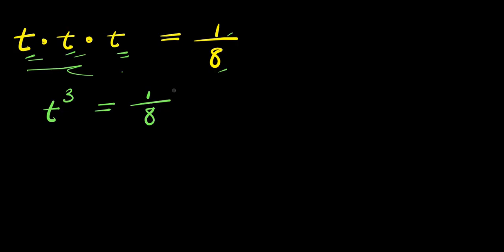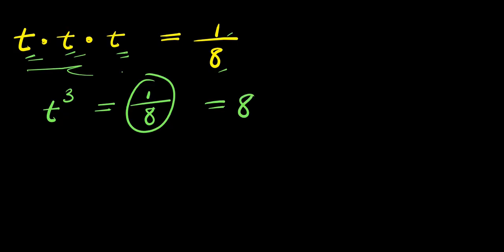Now remember, we are solving for all values of t, which are complex and real solutions, because there is another way of solving this that will only give you the real value of t. For instance, I can decide to write this 1 over 8 as 8 to the power negative 1.